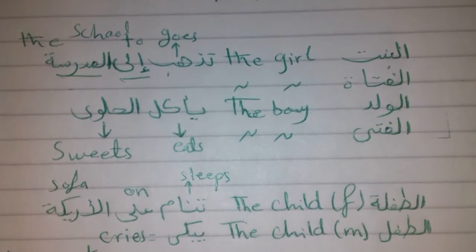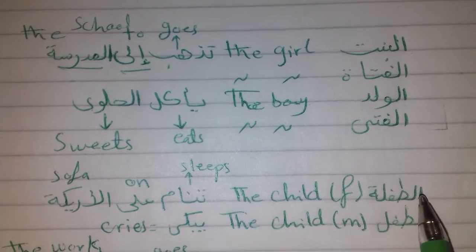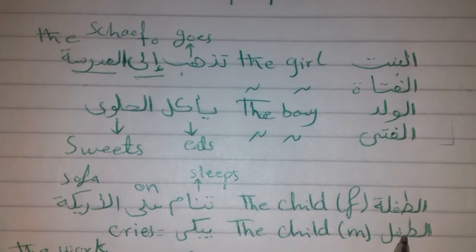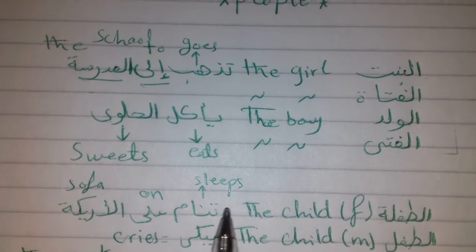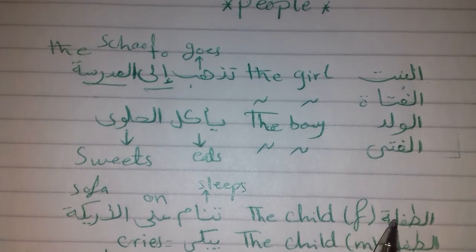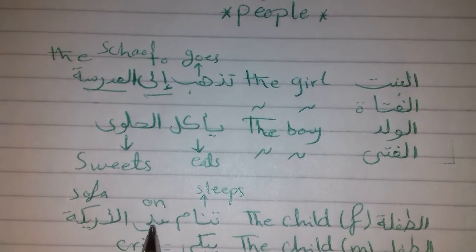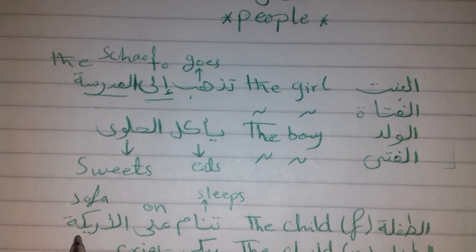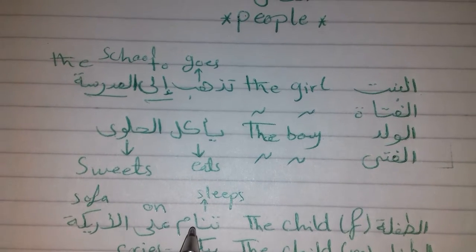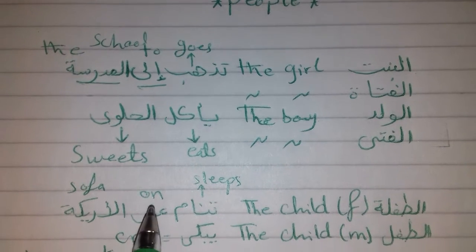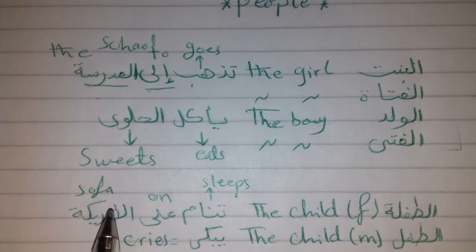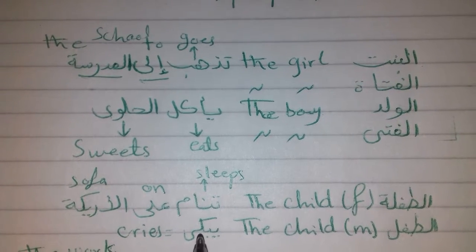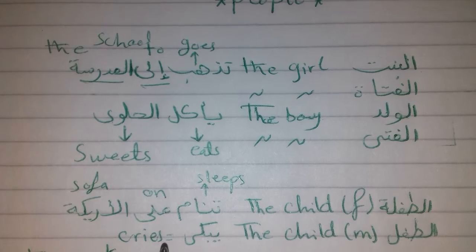So let's go to even younger ones. الطفلة meaning 'the female child,' or الطفل 'the male child.' Example: الطفلة تنام على الأريكة — تنام means 'sleeps,' الأريكة means 'sofa.' الطفل يبكي — يبكي means 'cries.'